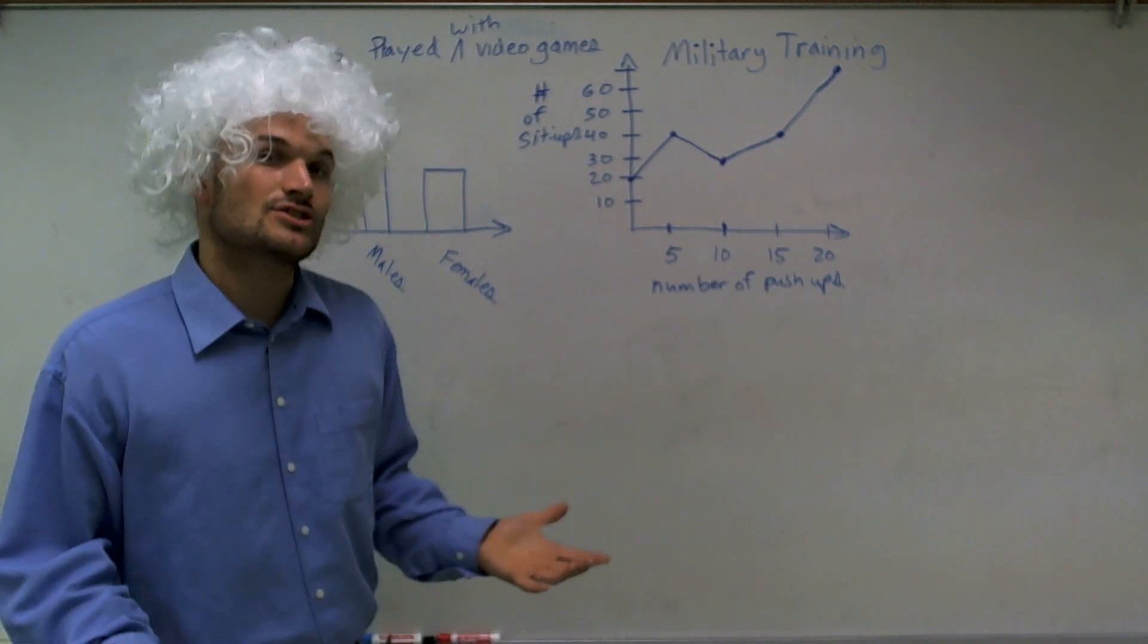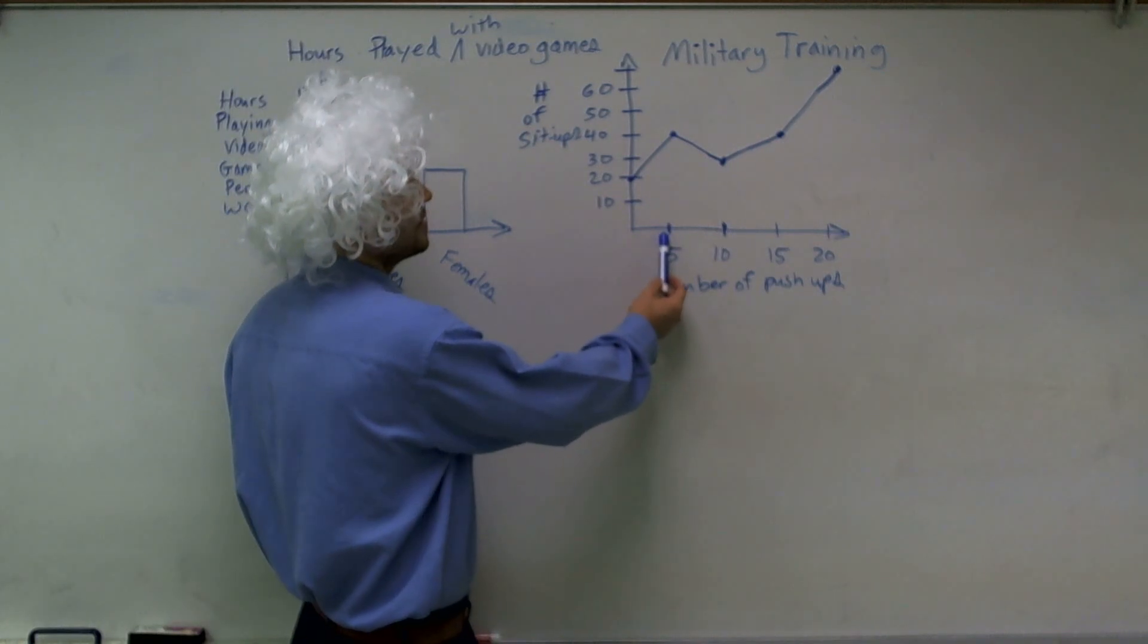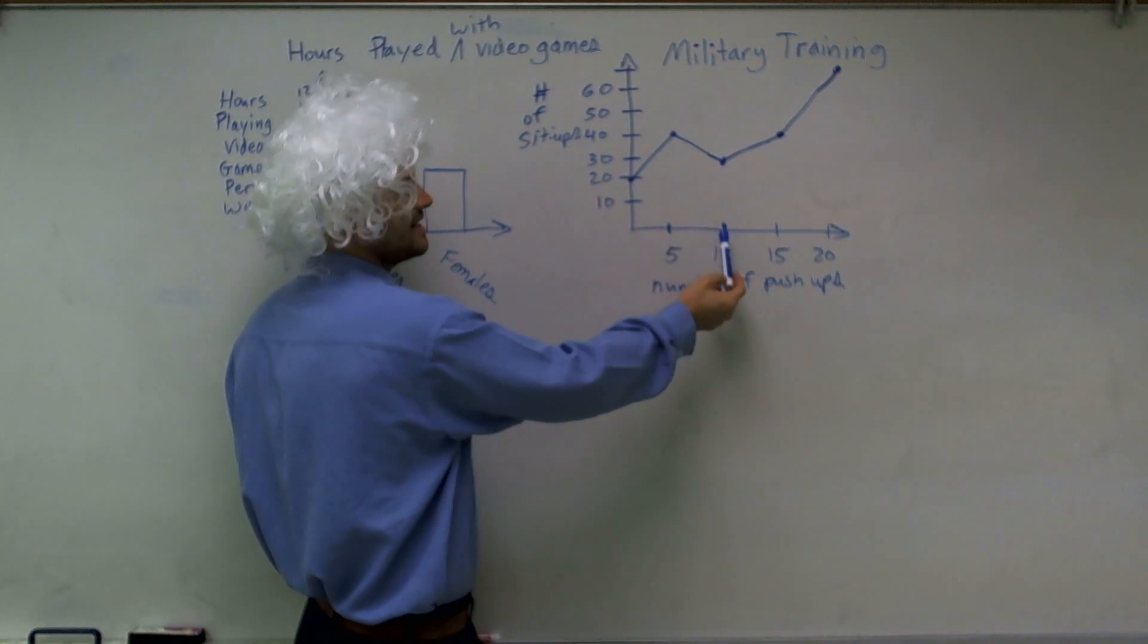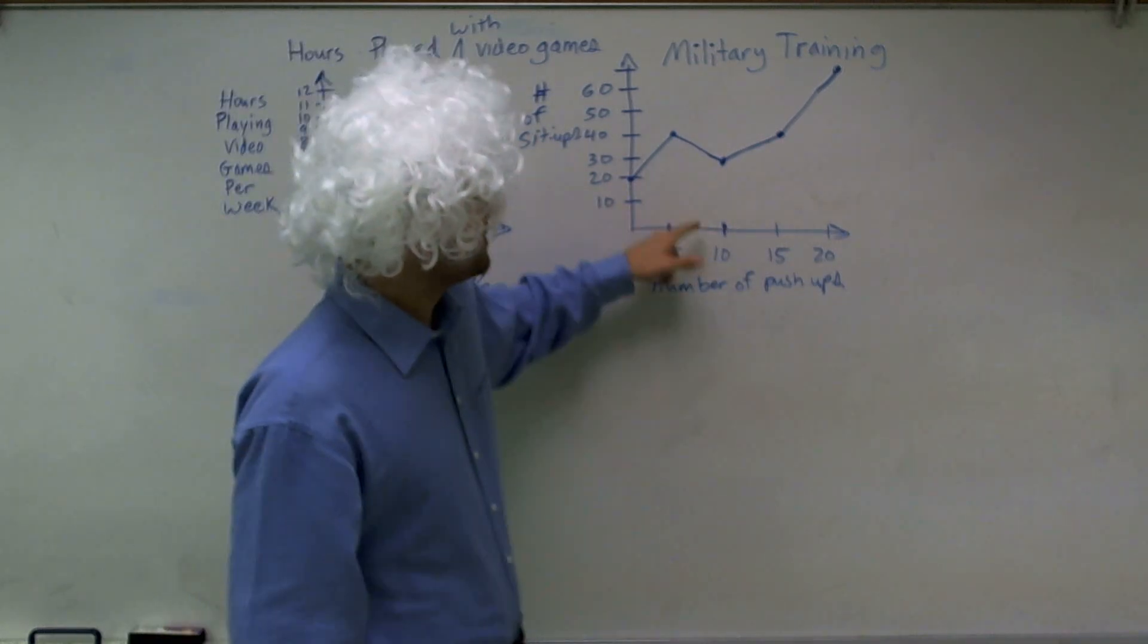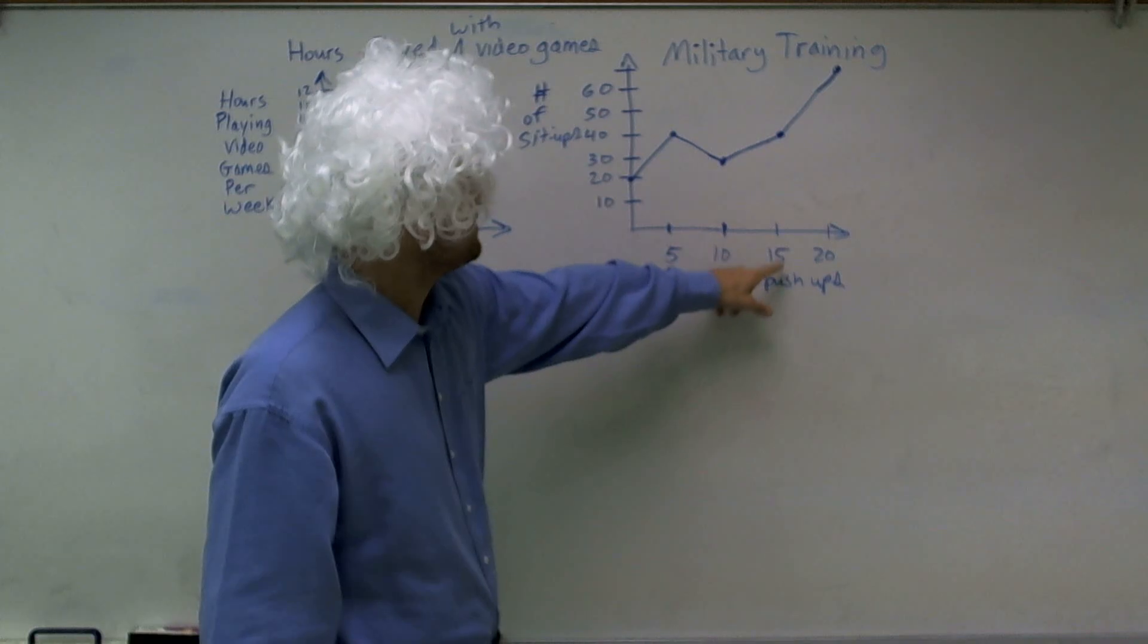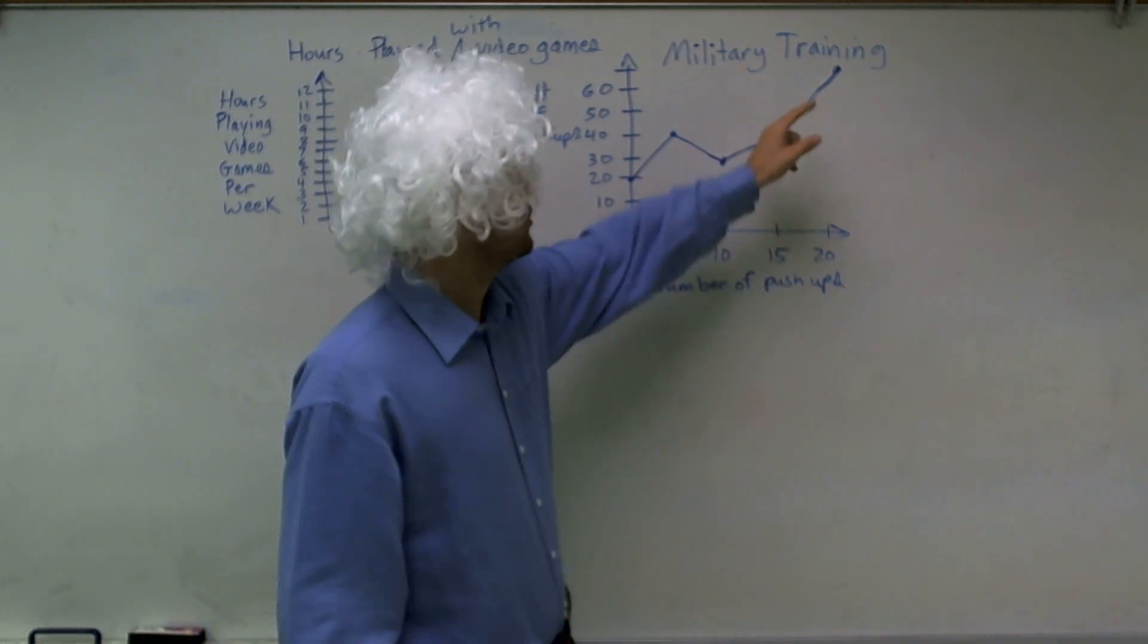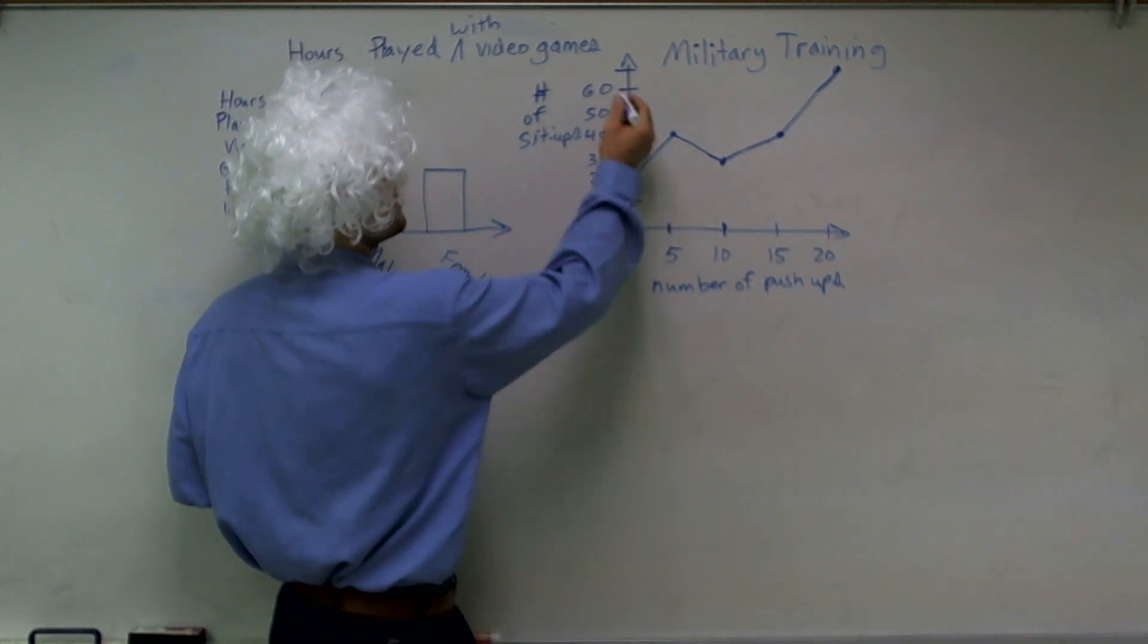Now let's look at the relationship between the two. So if you completed five push-ups, the average person looks like he competed and made 40 sit-ups. However, a person that did 10 push-ups only did 30 push-ups. But then it climbs back up. 15 push-ups goes up to 40 sit-ups. And 20 push-ups goes up to, looks like around 70 sit-ups.